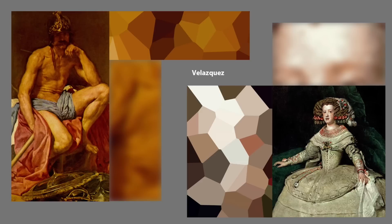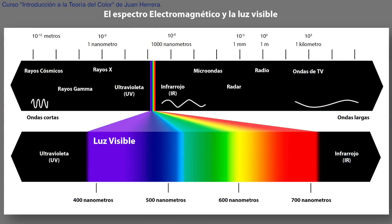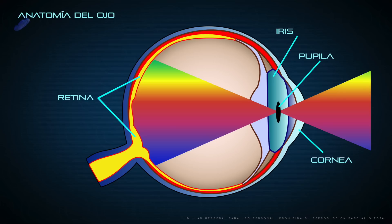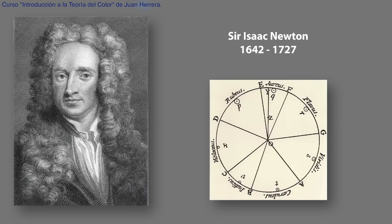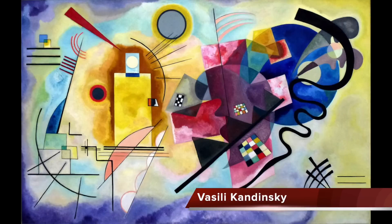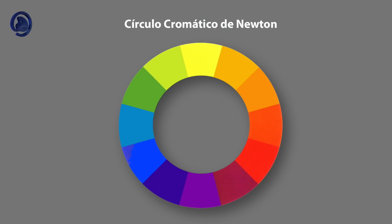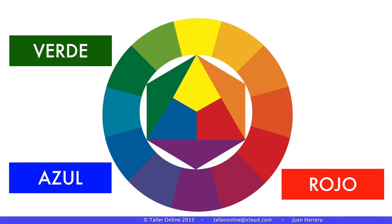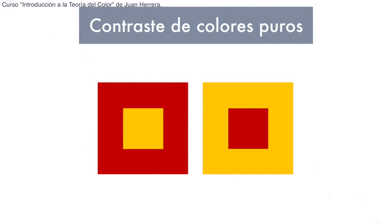El color y el uso que le dieron los distintos artistas. También vamos a ver la física del color, que es el espectro electromagnético y la luz visible. ¿Cómo ve el ojo el color? ¿Quiénes fueron los maestros del color? ¿Qué aportes hicieron a la teoría del color? ¿Y cómo fue evolucionando nuestra idea sobre qué es el color a lo largo del tiempo?